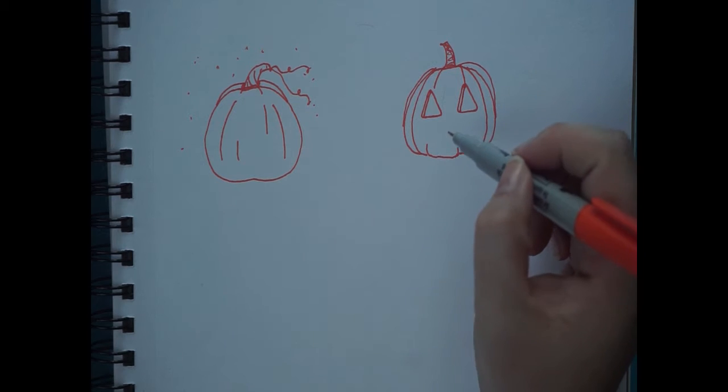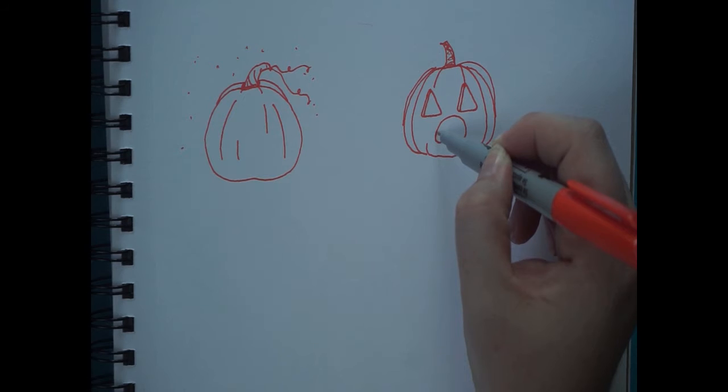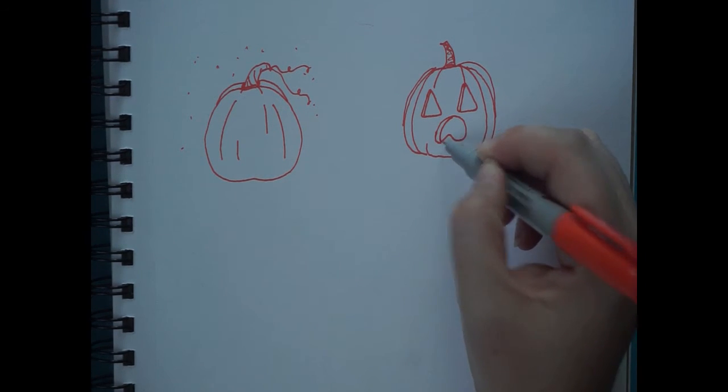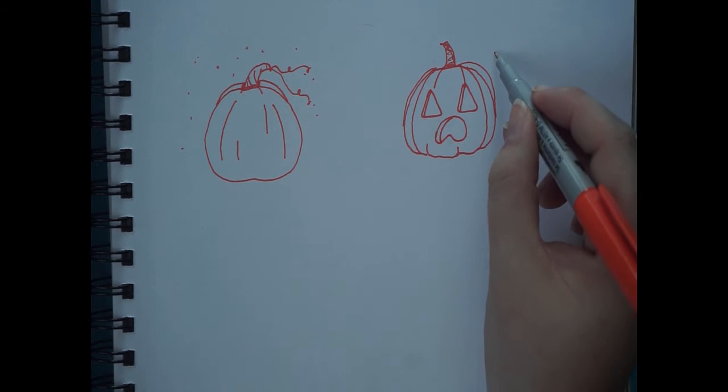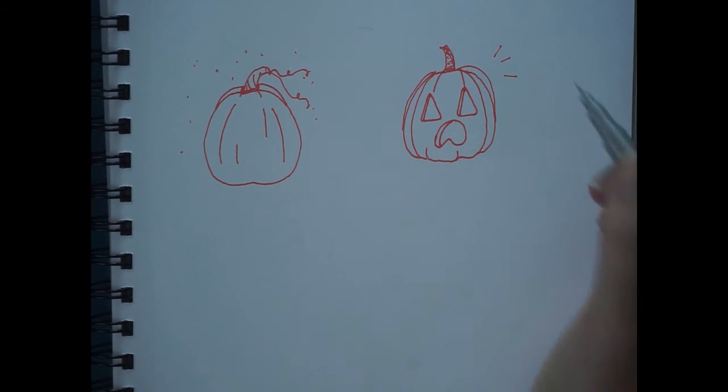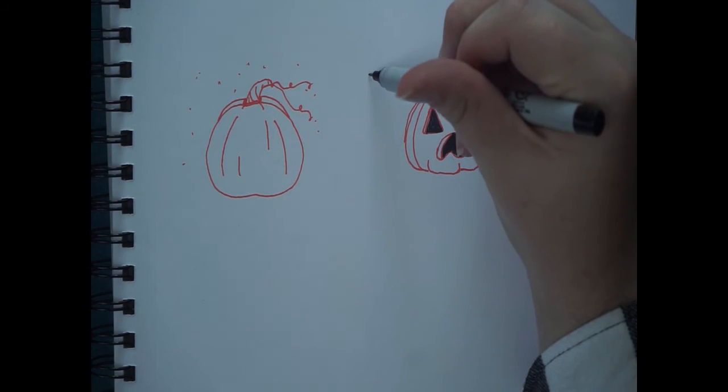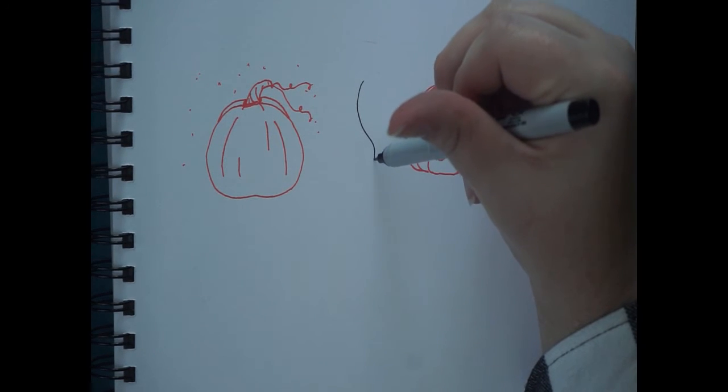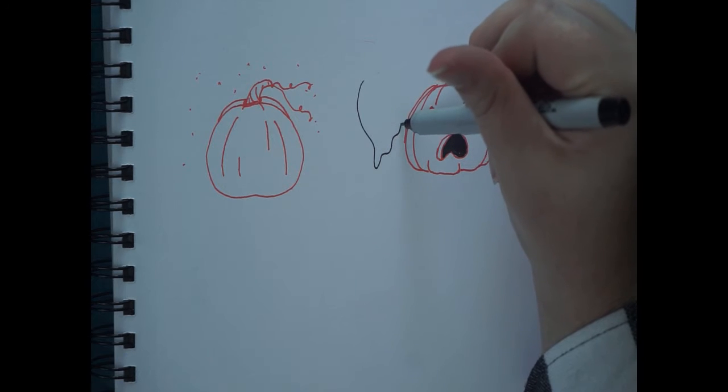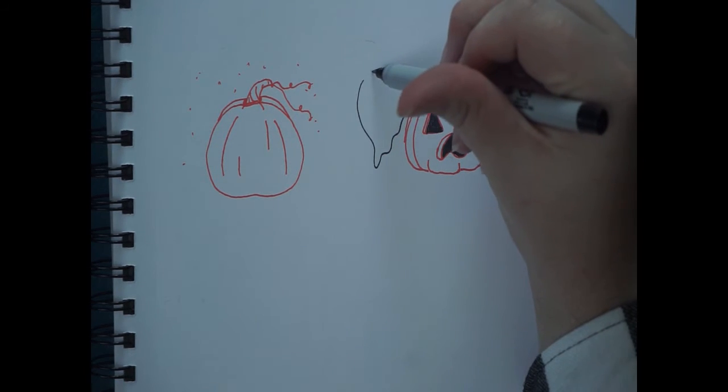You could have like little orange flames in there to represent that it's glowing, or you could have really bright yellow eyes and a bright yellow mouth and maybe a little bit of shading to show the candle inside.